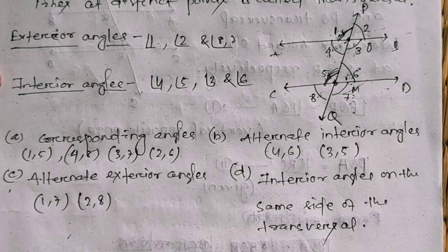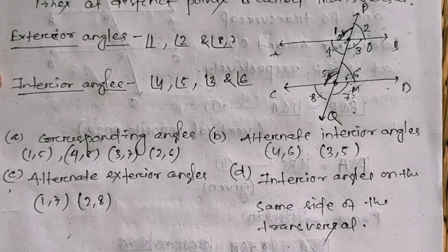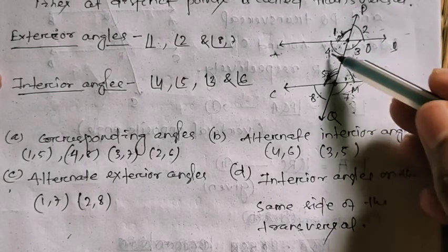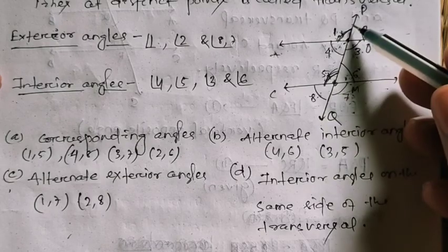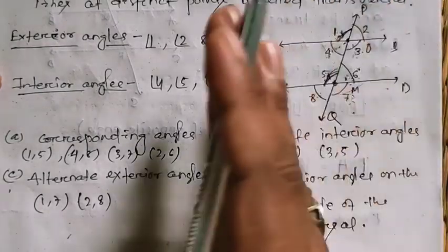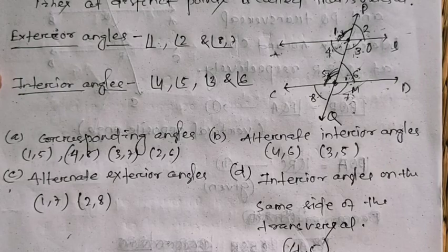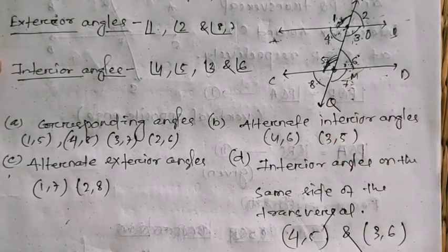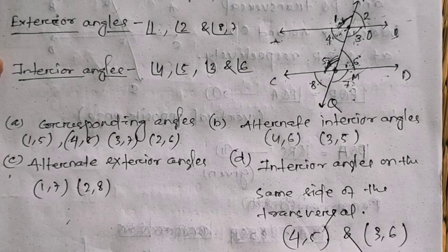The last pair type is interior angles on the same side of the transversal. The interior angles are 3, 4, 5, and 6. Angles 4 and 5 are on one side of the transversal, and angles 3 and 6 are on the other side. So 4 and 5 form one pair, and 3 and 6 form another pair of co-interior angles.